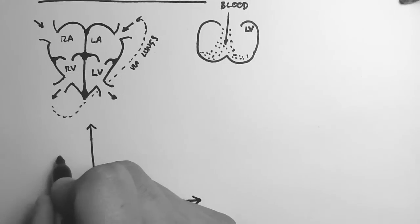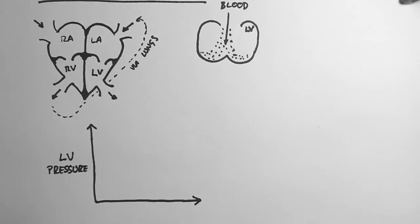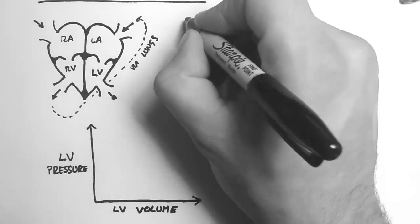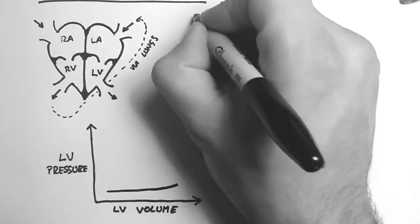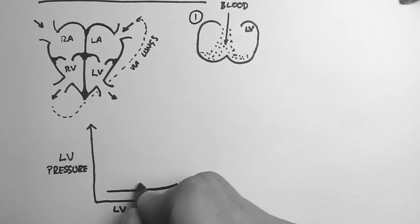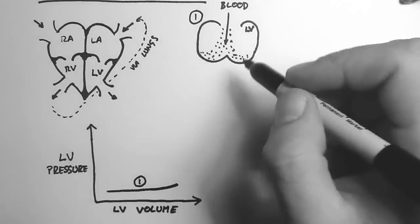So we're going to map on a graph the pressure of the left ventricle versus the volume of the left ventricle. Now this graph can be a bit confusing because it doesn't have a time axis. So what we're looking at is as the blood fills in to the left ventricle, we get more volume, but not really a change in pressure. So I'll label this one. The pressure goes up a little bit as it starts to fill.